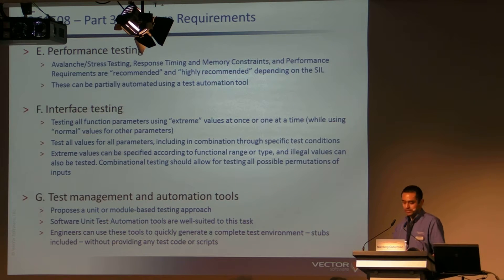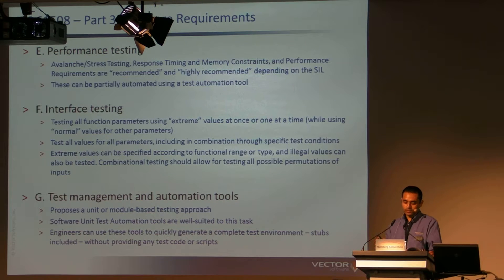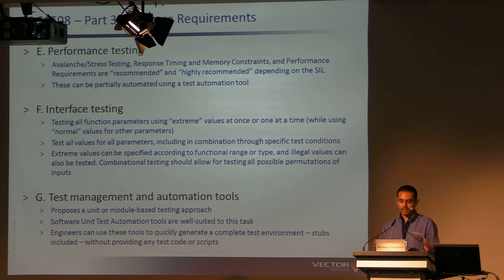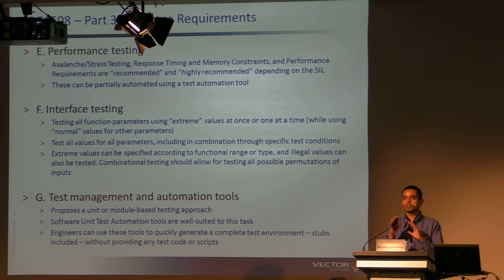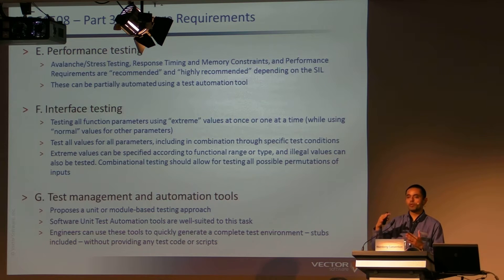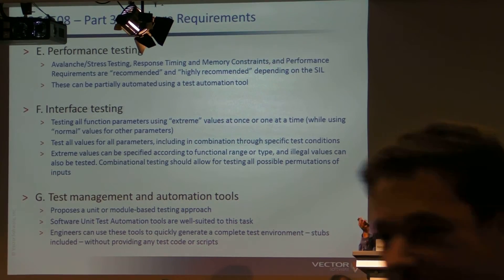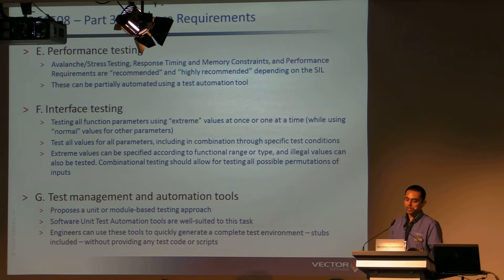And then F is interface testing. Here during the software design and implementation it's recommended to test the interface of the code at the function call level. There are several levels of completeness of testing that are feasible. The most important levels are testing all function parameters using extreme values at once, or using one at a time — setting one particular value to min or max while keeping all the other values in the normal range and verifying the behavior. Or testing all values for all parameters including combinations to a specific test condition — we call this permutation testing, where we iterate all of the parameters between minimum and maximum value, choosing equidistant points between that, and doing all possible permutations, iterating the code to make sure that for all these possible values it is at least stable and doesn't crash or raise an exception.